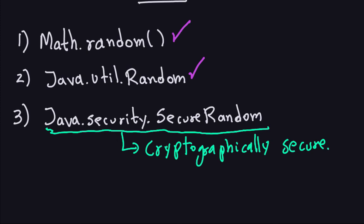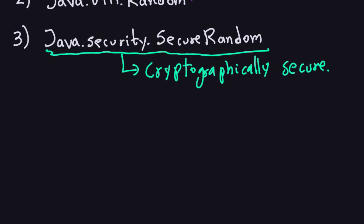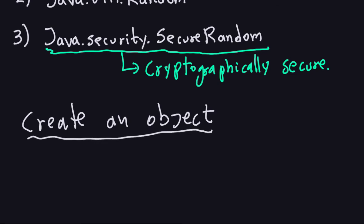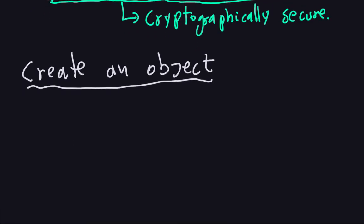So let's look at number three now. If you remember what we did for the second part, when using the Random class to create random numbers or booleans, we first create an object of the class. And of course, when you create the object, you have to import the library for SecureRandom.